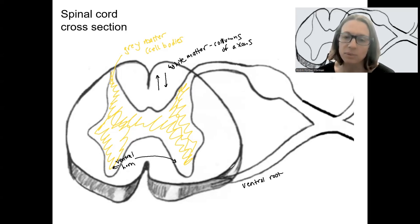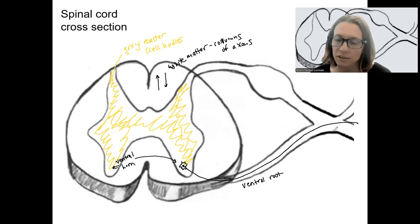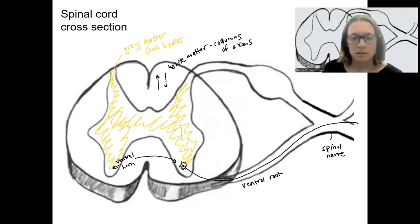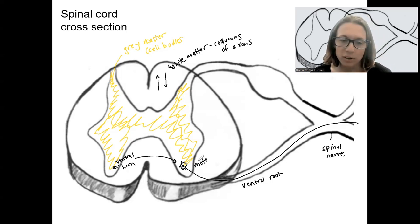Where the information exits and becomes eventually the spinal nerve. So let's go ahead and draw a neuron in this gray matter, a multipolar neuron. This is a motor neuron. Its axon is going to travel out via the spinal nerve. So I'll keep this black here. Multipolar motor, somatic motor information is contained in this ventral horn.